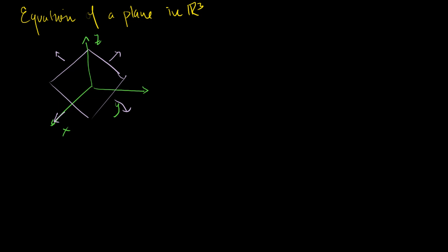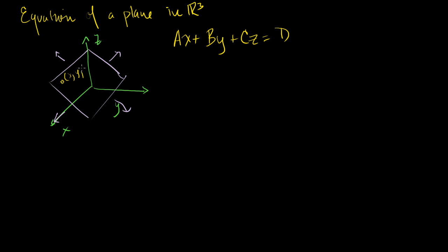The equation of a plane — and you've probably seen this before — is a linear function of x, y, and z. So it's ax plus by plus cz is equal to d. If this is the graph of that plane, then that means every point on this plane, every x, y, and z on this plane satisfies this equation.